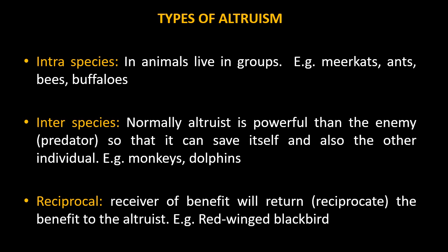Interspecific altruism is found among individuals of different species. In that case, it is not necessary that both of them stay together or have previous contact. Normally the Altruist is more powerful than the enemy — mostly a predator — so that it can save itself and also the other individuals. Dolphins have been observed to help humans and other dolphin species in distress. Monkeys, when they see predators like tigers or leopards, make warning calls by which others like deer and other grazers are alarmed.